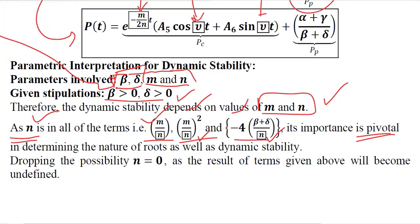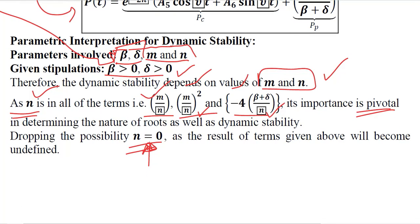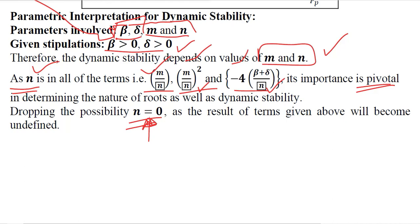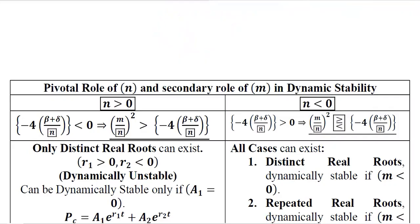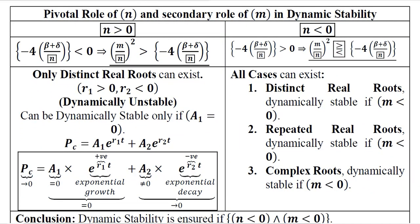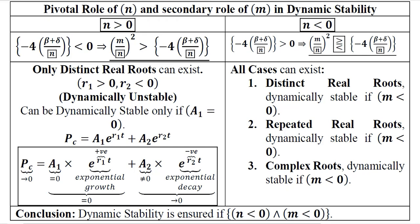We must drop the possibility of n equals 0 because price expectations are present, and as long as they are present their coefficients will be non-zero. Also, m is considered to be non-zero because it is also a coefficient of the price expectations. Moreover, if n equals 0 is put into the expressions, they become undefined — which is also not something we want. A very helpful table summarizes approximately all the possibilities, focusing on the pivotal importance of n and the secondary role of m in determining the dynamic stability of the equilibrium.